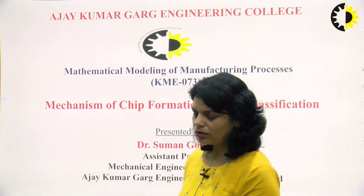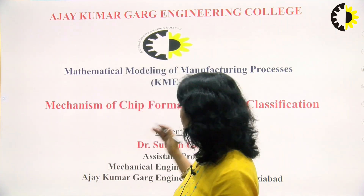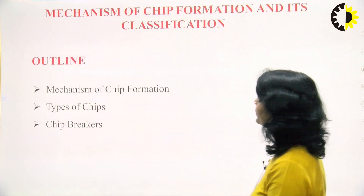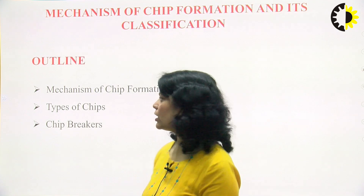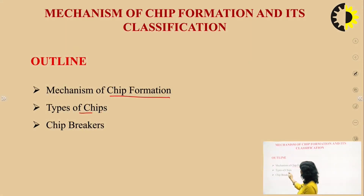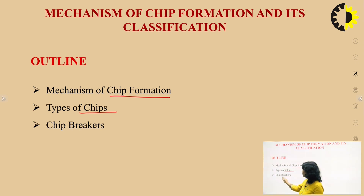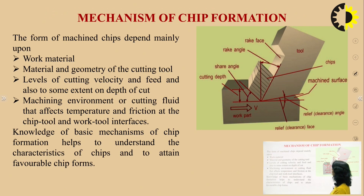We will see here the different types of chips that are formed and what are the factors on which the formation of chip will depend. The outline of today's lecture: first we will discuss about the mechanism of chip formation, then the various types of chips, and then chip breakers — how we can break these chips.